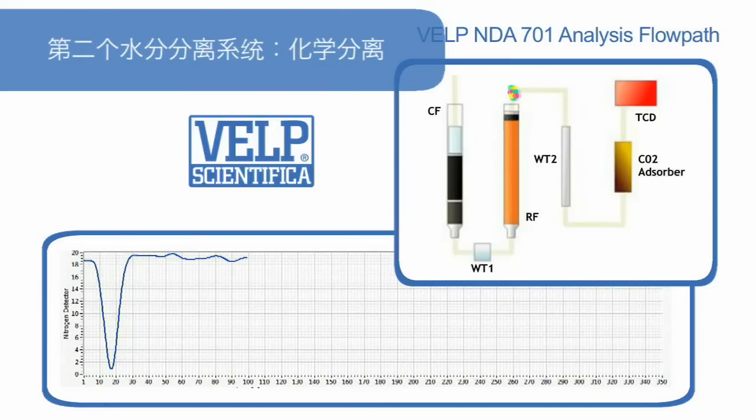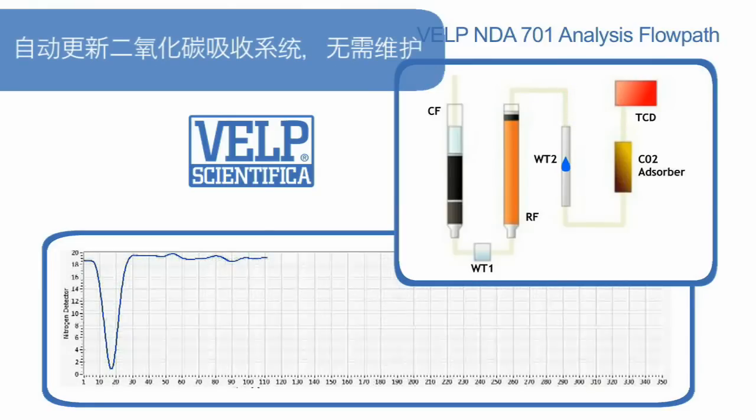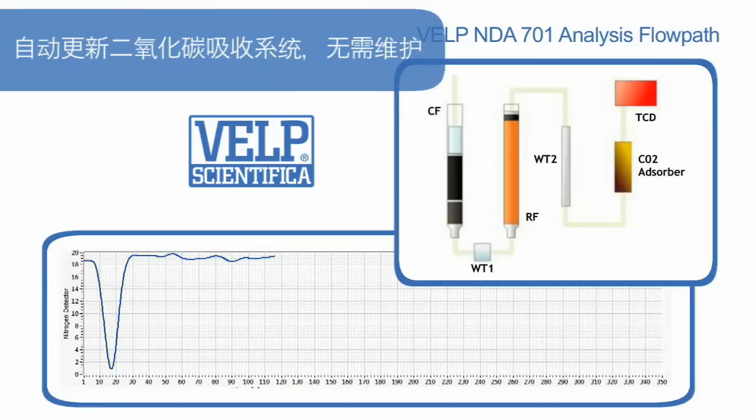Any remaining water is completely absorbed by the second chemical water trap. A maintenance-free auto-regenerating CO2 absorbing system ensures the elimination of all of the CO2.